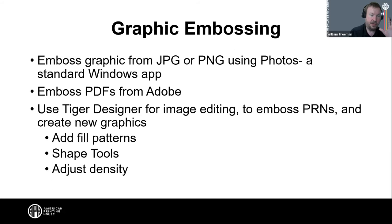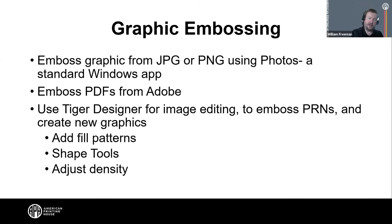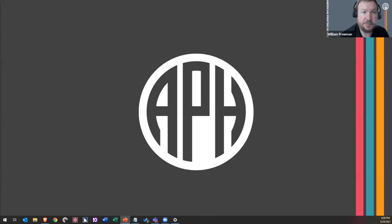For graphic embossing, you can emboss PDFs from Adobe. You could also take a screenshot of your T-Map as a JPEG, take it into Tiger Designer to finish it up — add Braille, edit it, add fill patterns, use the shape tools, adjust the density — and make a PRN. There'd be a bit of work involved, but it is something you could do.